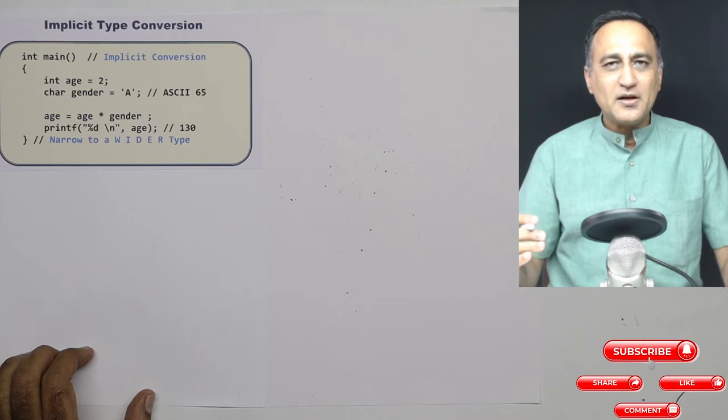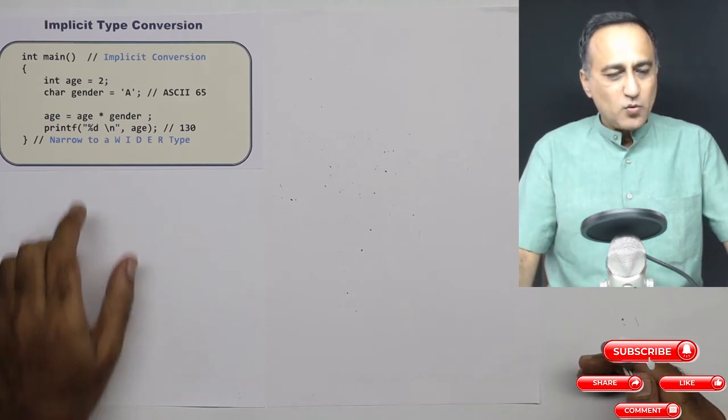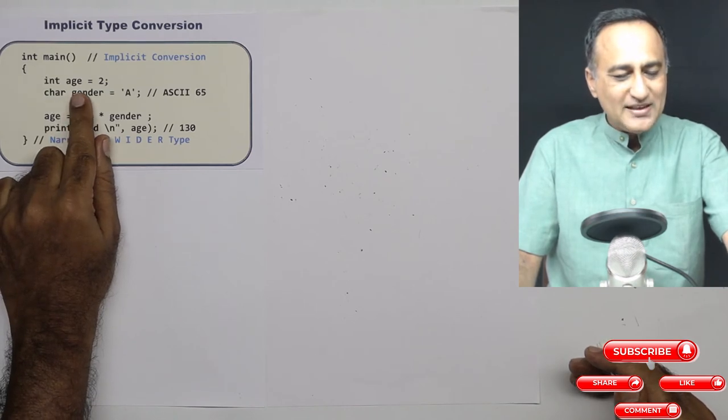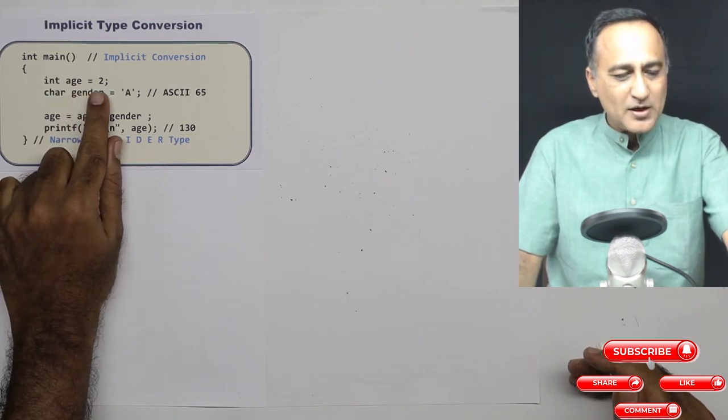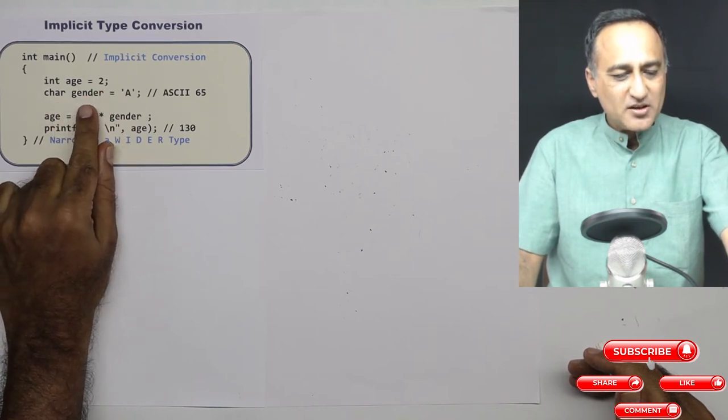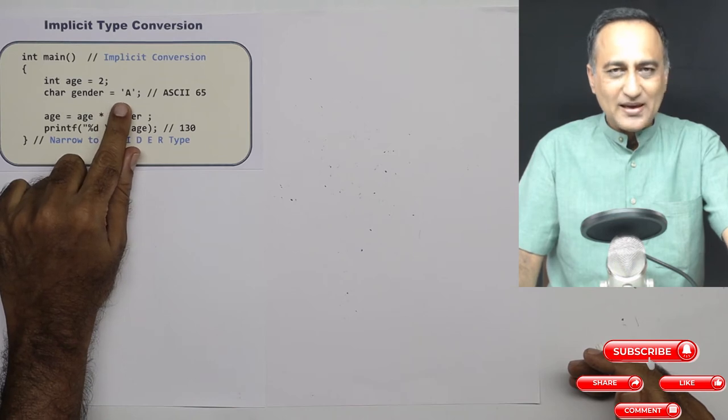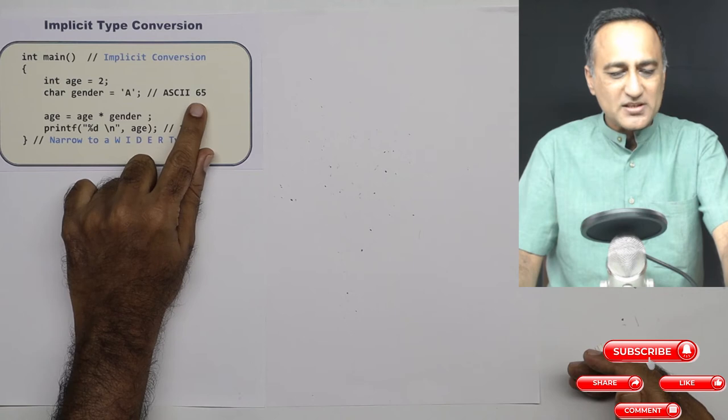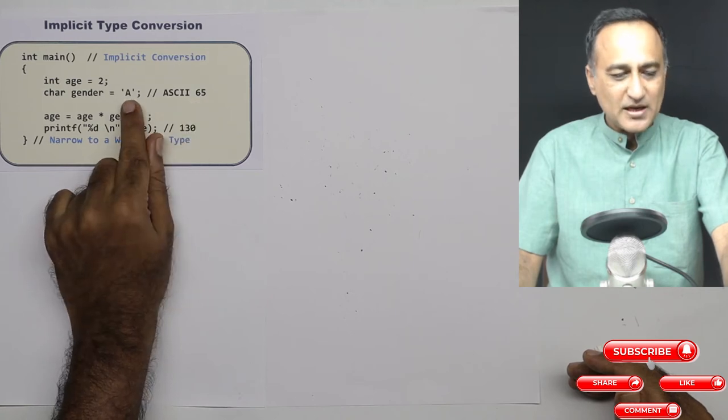So here what I have done is I have defined an integer variable called age whose value is 2. I have defined a character called gender whose initial value is A. A is nothing but internally it represents the ASCII value 65 since it is capital A.